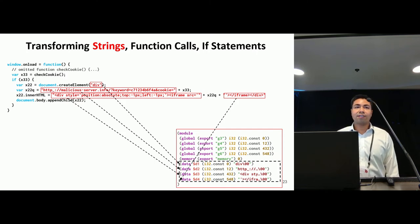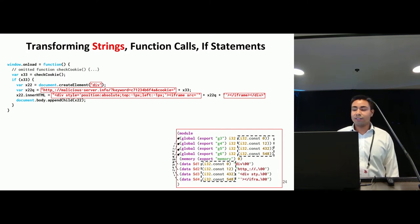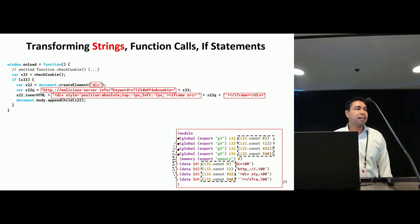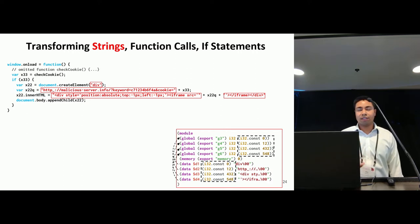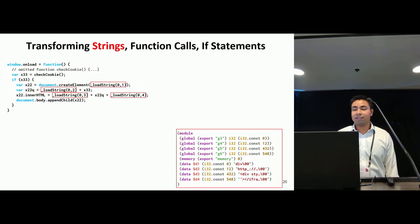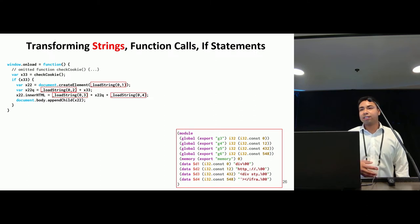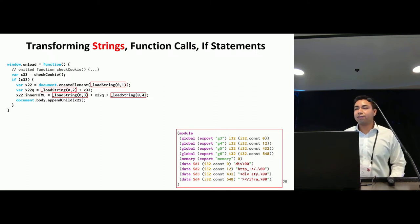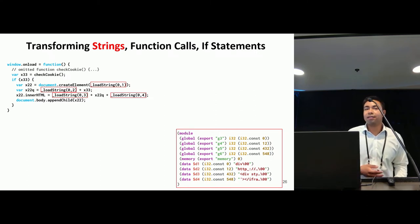The starting index of each string in memory is stored as a global variable, which are accessible across the entire module and can be exported to JavaScript. On the JS side, we use a helper function, loadString, to reconstruct the string literals from the WebAssembly given the string indices.